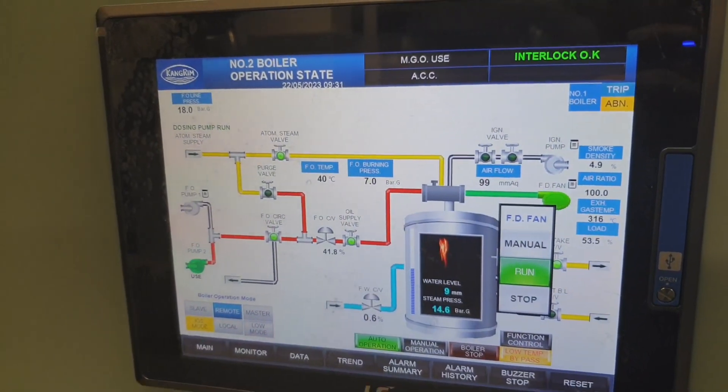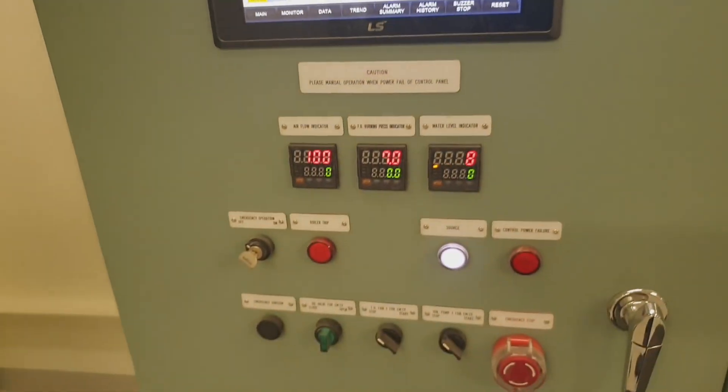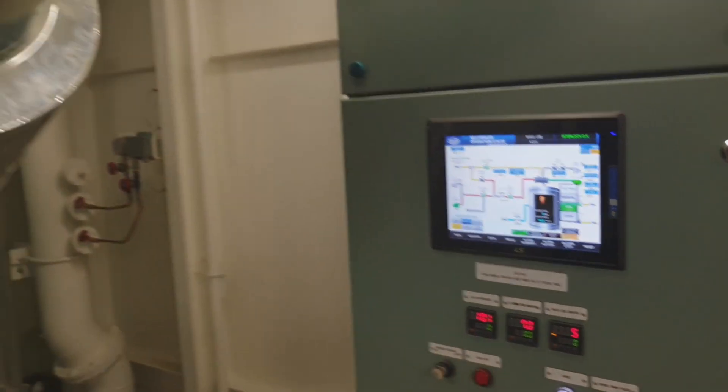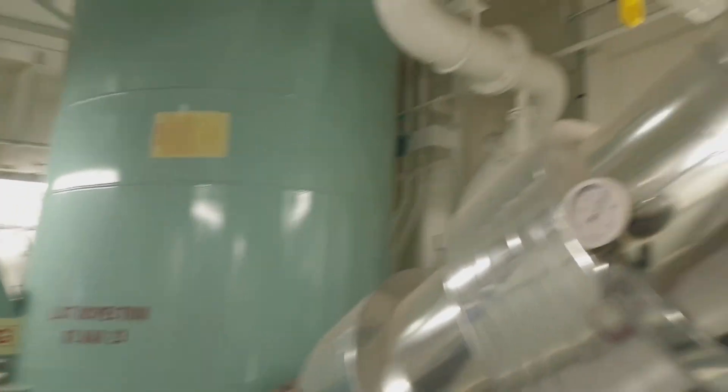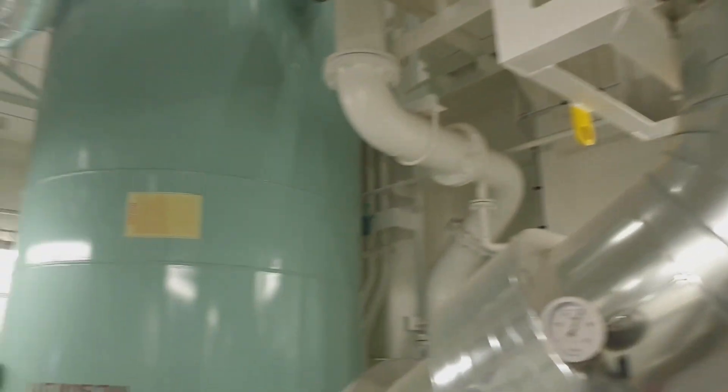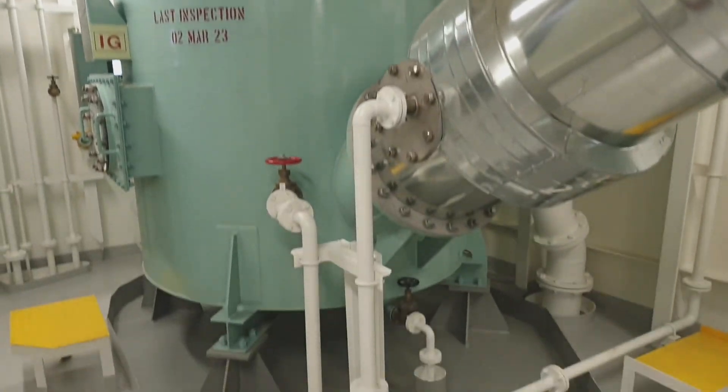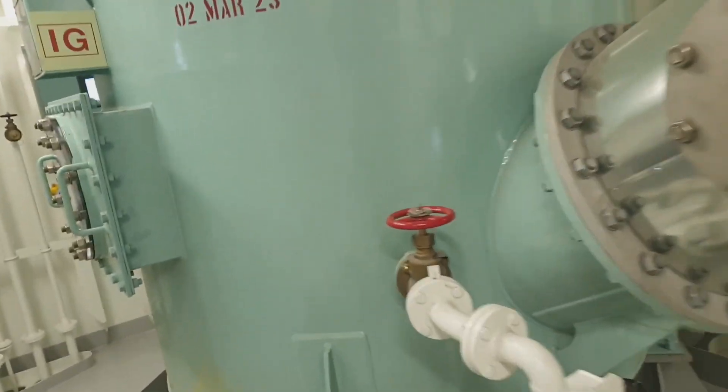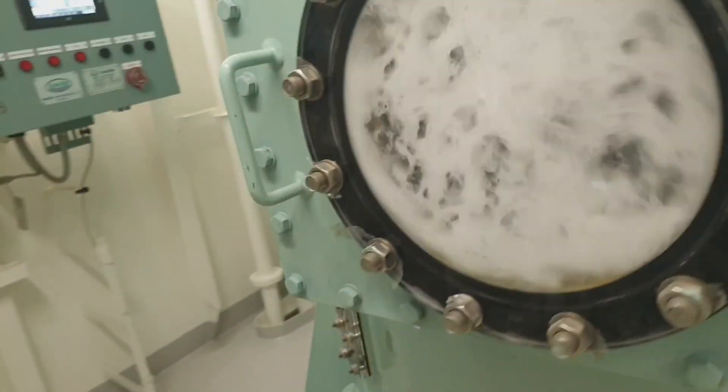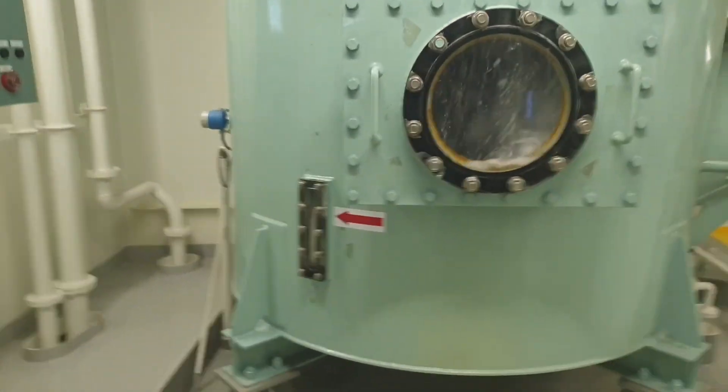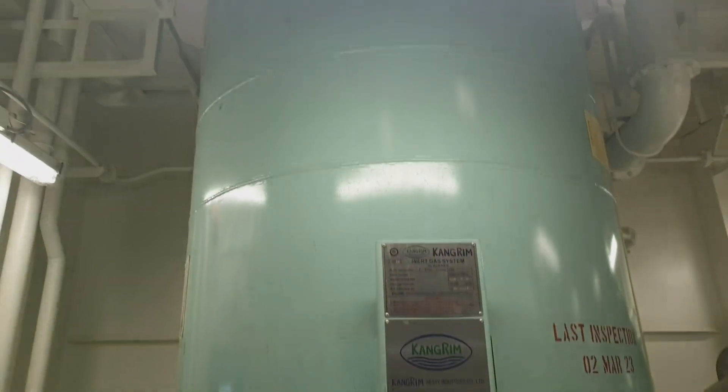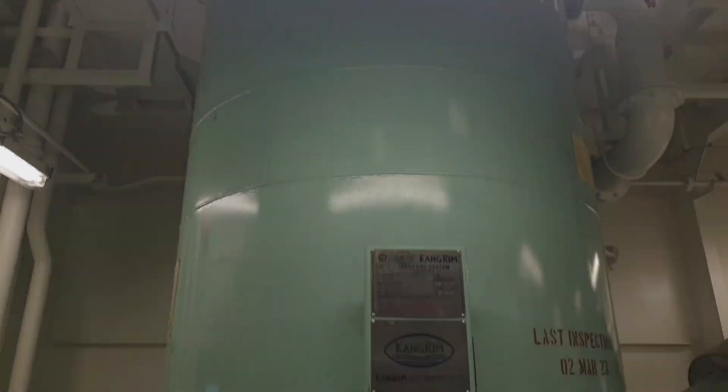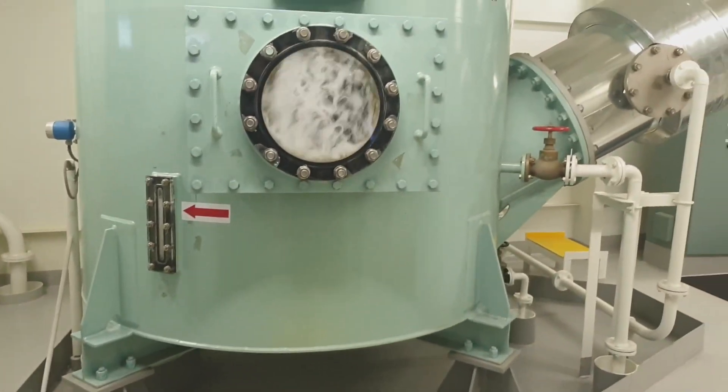This is the boiler control panel as one of the main components of the inert gas system, aside from the inert gas generator. In this vessel, the inert gas is taken from the flue gas of the auxiliary boiler. Other designs of vessels have an inert gas generator.